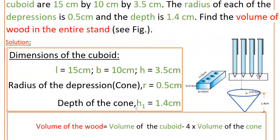And here there are four conical depressions in the shape of a cone. The radius of the cone is 0.5 centimeters and the depth of the cone is 1.4 centimeters. H1 is 1.4 centimeters.